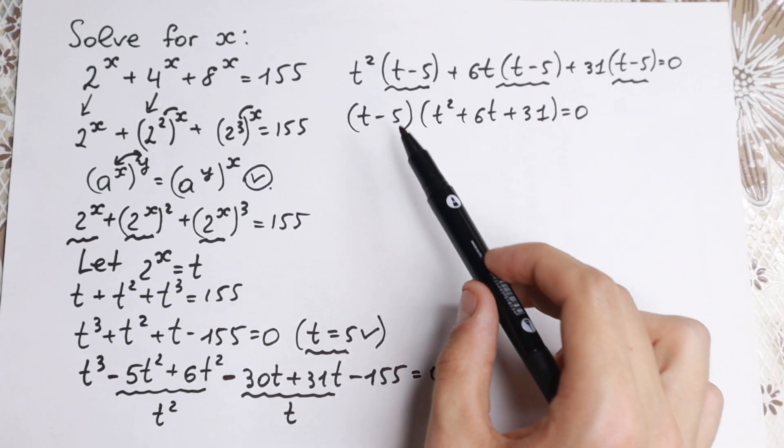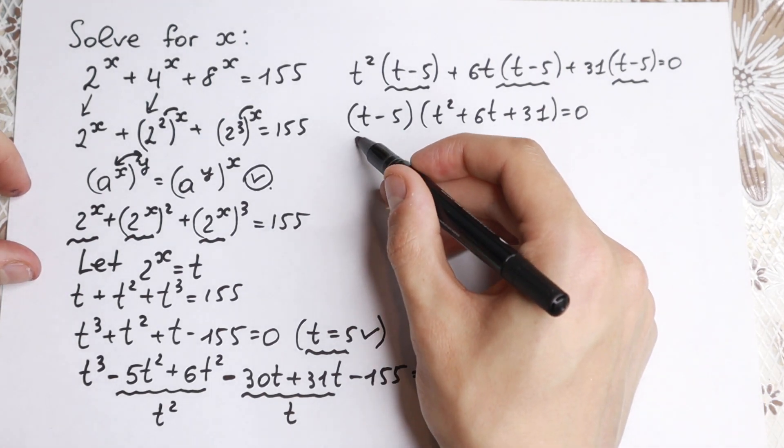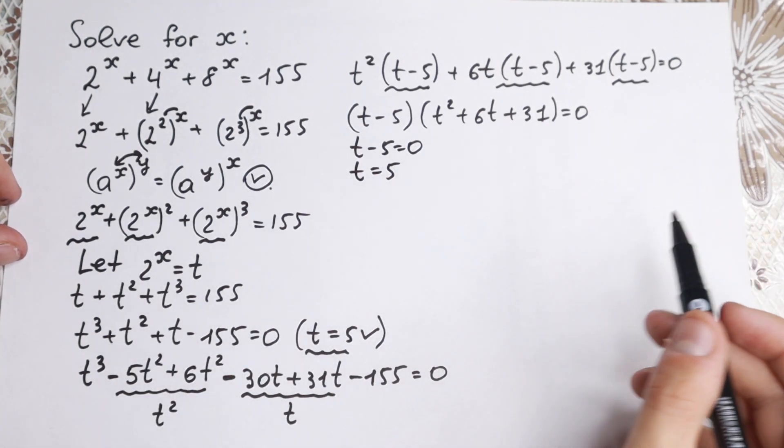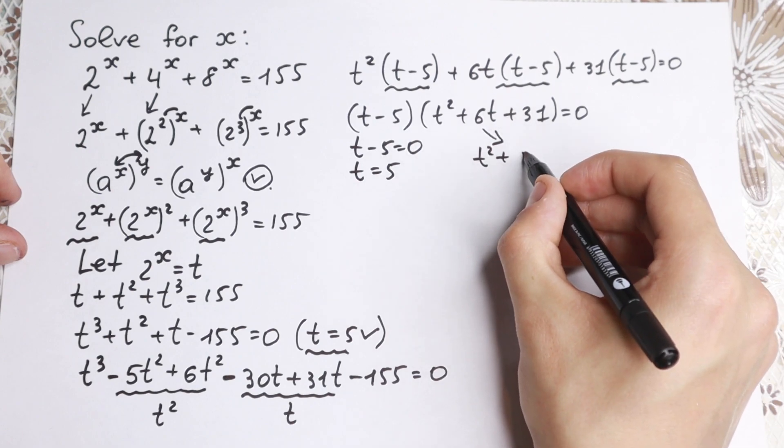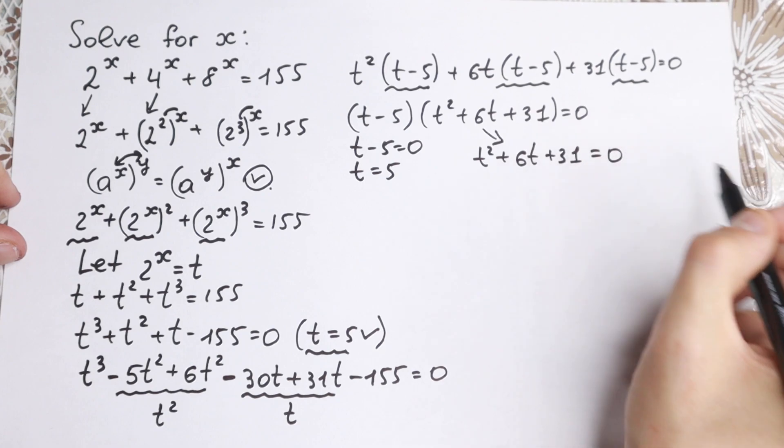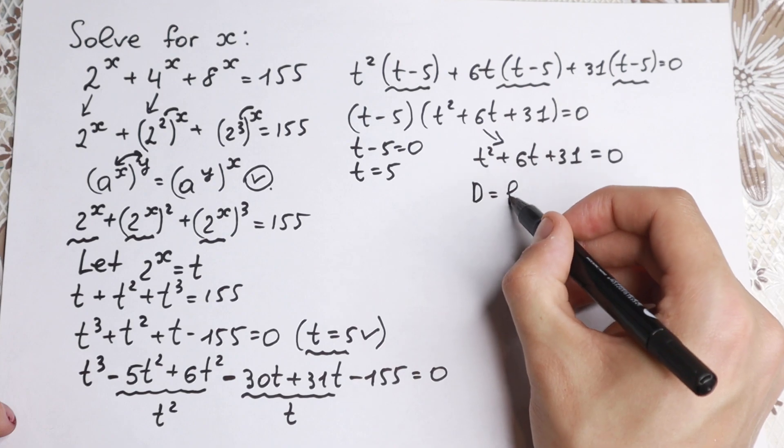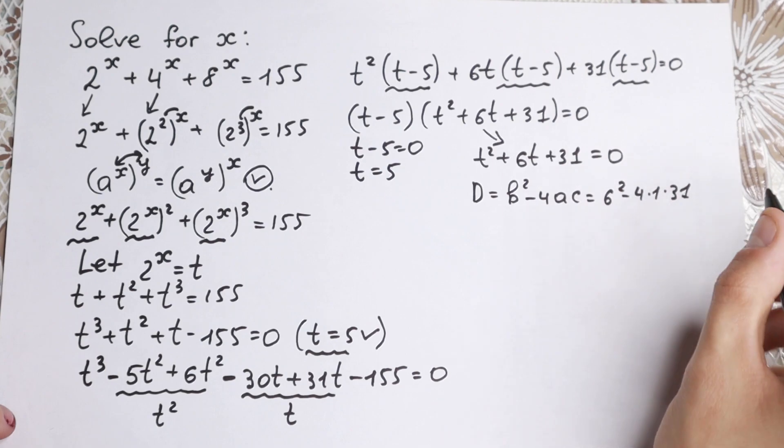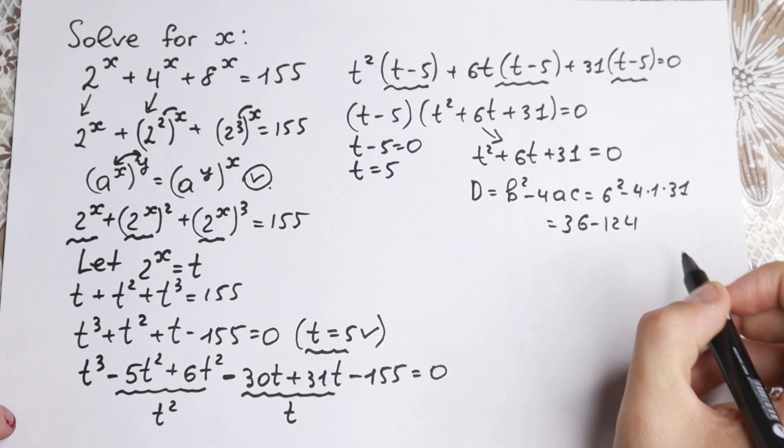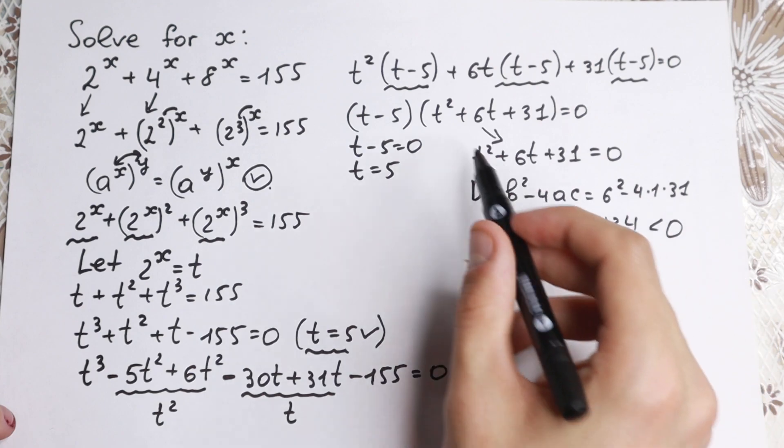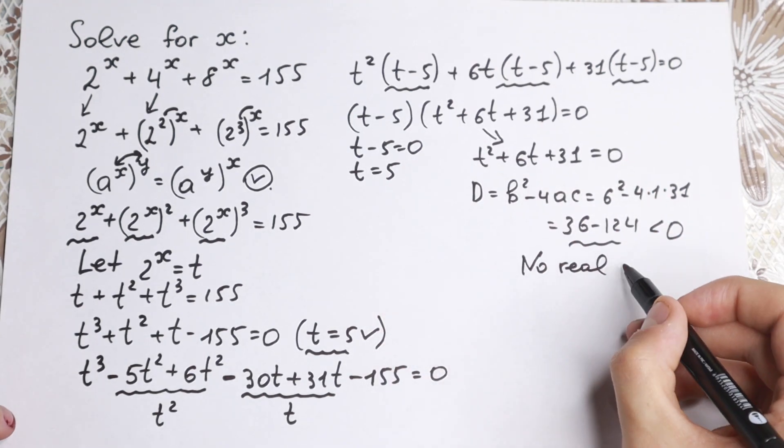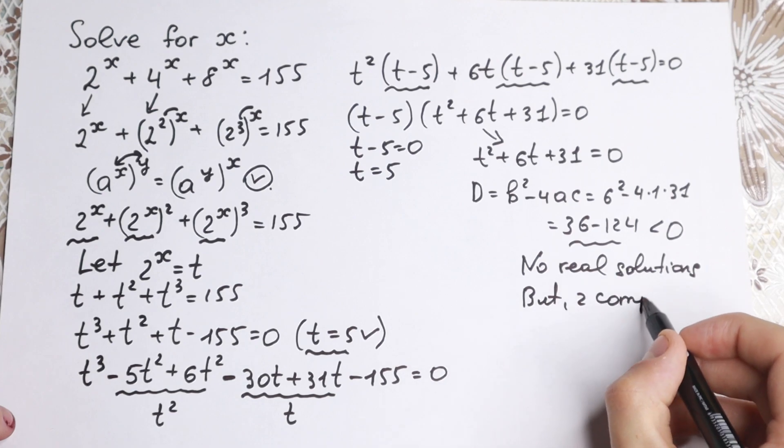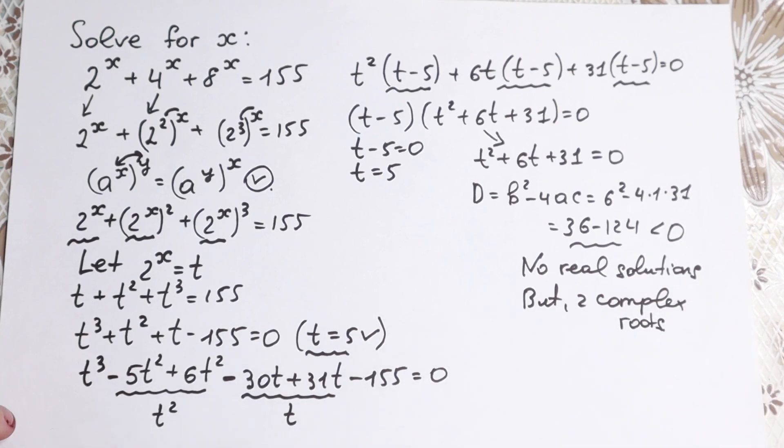Of course we factored this problem. We have t minus 5, we have another parentheses. So first case, t minus 5 equal to zero, and t equal to 5. This is our first root if we're talking about t. And the second parentheses, we have right here t squared plus 6t plus 31 equal to zero. And if we look closely, the discriminant we have: D equals b squared minus 4ac. This will be equal to 6 squared minus 4 times 1 times 31. We will have 36 minus 124. And if you look closely this is negative value. So in these parentheses we have no real solutions, but two complex roots in this case.